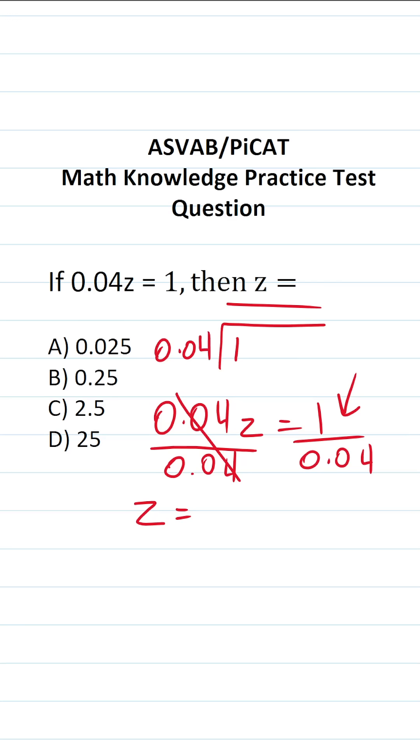Now, you can't do long division with a decimal outside the division bracket. You can see that we have a decimal in 0.04. So we're going to move the decimal 1, 2 times to the right to make that 4. And at the same time, there is a decimal right here in 1. We're going to shift that decimal corresponding number of times to the right, notably 1, 2 times. And we're going to add 2 zero placeholders to make this 100.